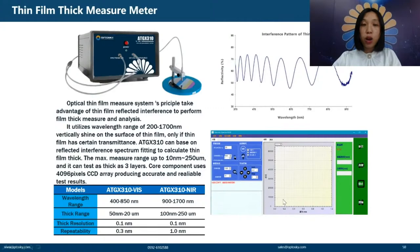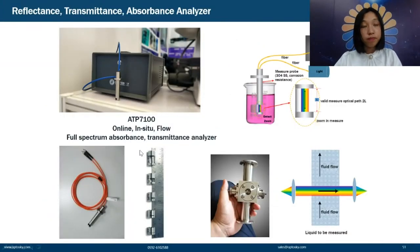Similarly, thin film measurement uses thin-film interference: the reflected light from film interfaces generates an interference pattern that allows thin film thickness to be calculated. Our software handles the analysis and our model lineup covers these applications.